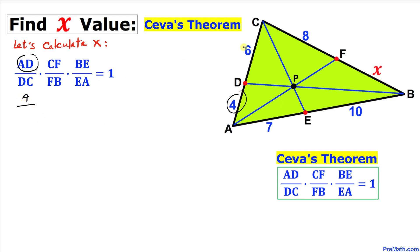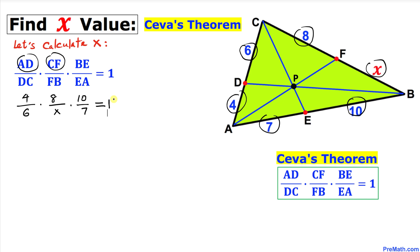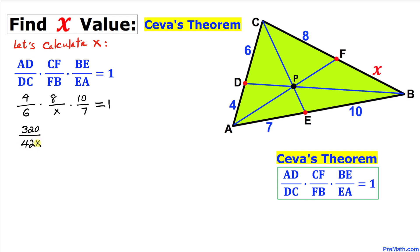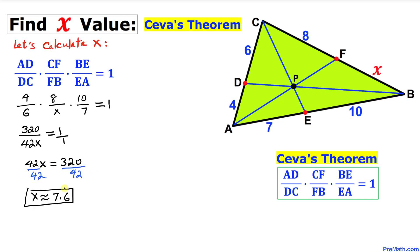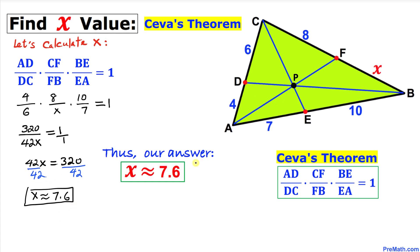Over DC, which in our case is 6, and then times CF, which in our case is 8, divided by FB, which is the unknown X, and then times BE, which is 10, over EA, which is 7, equals 1. Multiplying the numerators and denominators: on the top we get 320, divided by 42X, equal to 1. Cross multiplying gives us 42X equals 320, and dividing both sides by 42 gives us X approximately equal to 7.6. This is our X value.